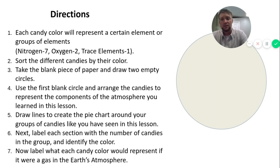Your directions is each candy will represent a certain element or group of elements. In this case, I wanted the seven brown ones to go with nitrogen. The oxygen will only have two. And then your trace element will be that yellow one, which will just be that one. Go ahead and sort the different candies by their color. I want you to take out a piece of paper and draw two empty circles. Use the first blank circle and arrange the candies to represent the components of the atmosphere you learned in this lesson. Once you do that, go ahead and draw the lines to create the pie chart around your groups of candies like you saw previously. And then next, label each section with the number of candies into this group and identify the color. So identify the color with the actual element that it represents. Now label all of that, just like I said.